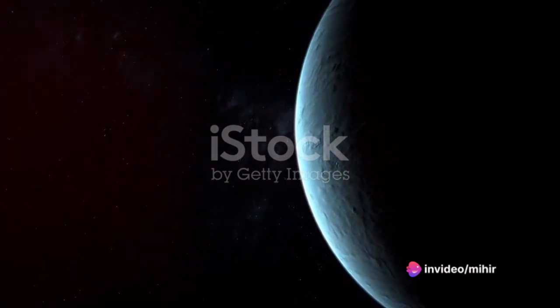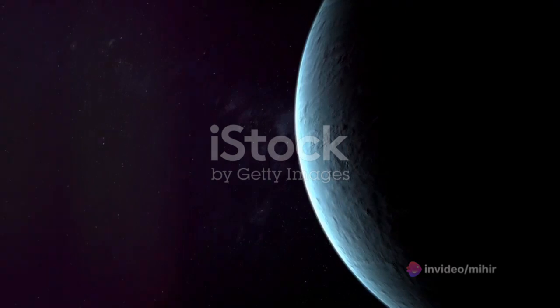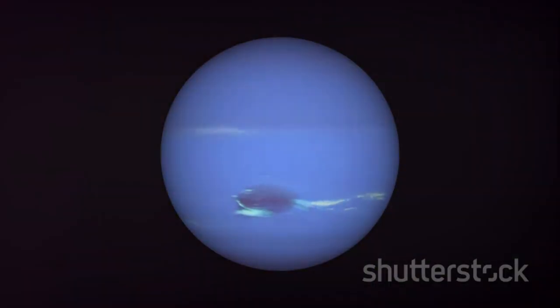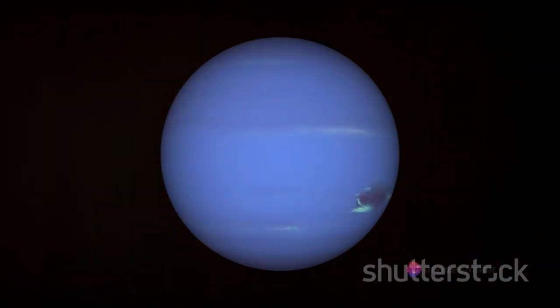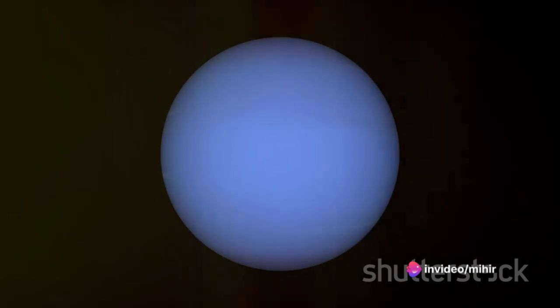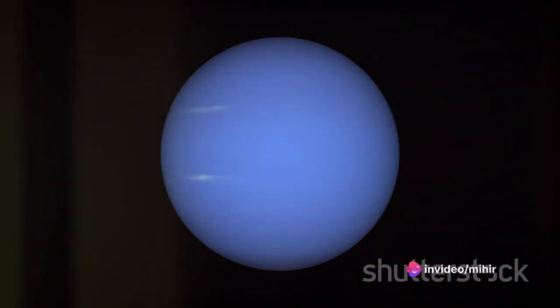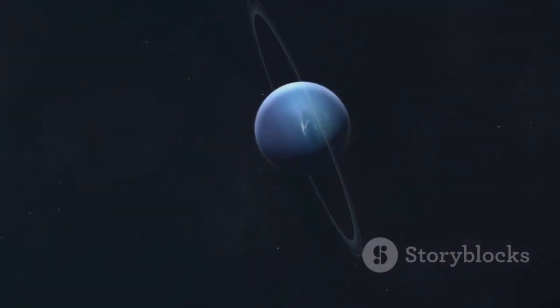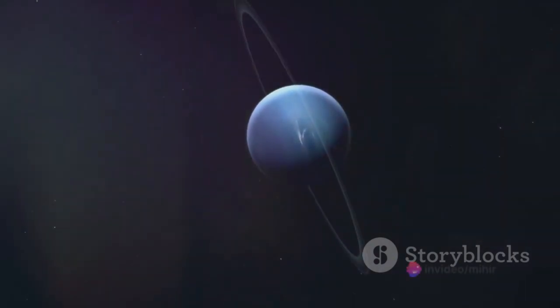Venturing further out, we encounter Uranus and Neptune, the ice giants. These planets, while still mostly composed of gas, have a higher proportion of ices - compounds like water, ammonia, and methane, which freeze in the frigid temperatures so far from the Sun. Uranus, with its unusual tilt, spins almost on its side, while Neptune, the farthest planet from the Sun, is home to the strongest winds in the Solar System.